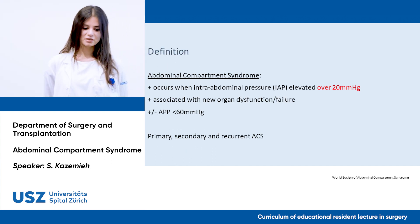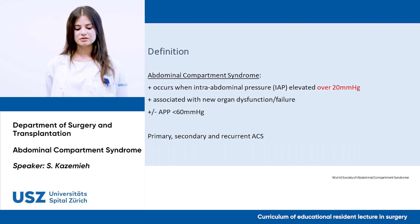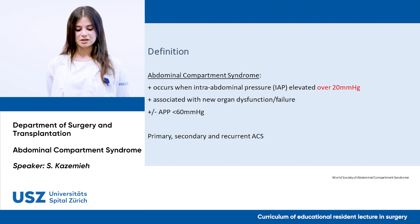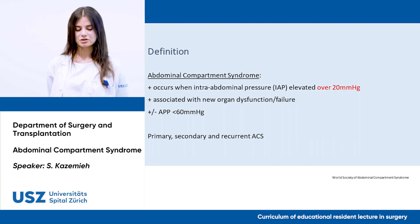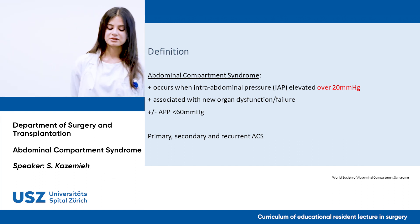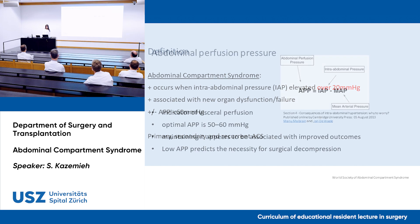Starting with the definition: Abdominal Compartment Syndrome occurs when there is an intra-abdominal pressure elevated over 20 mmHg, associated with new organ dysfunction or even failure. It can present with an abdominal perfusion pressure below 60 mmHg. There are different types — it can be primary, secondary, or even recurrent.